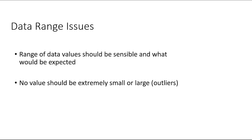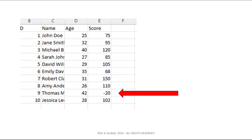Data range issues mean the range of data should be sensible — you should not have extremely small or large values, which are your outliers. This is not a statistics course, so we're not going to talk about the 1.5 IQR method you learn in stats. But if you look at the data and clearly a value of negative 20 for a score doesn't make any sense, that would be considered both a validity issue and an outlier issue.